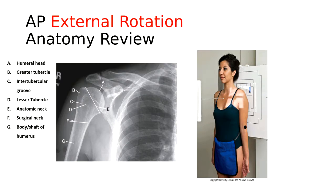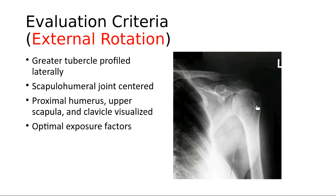On the labeled anatomy: A is the humeral head, B is the greater tubercle — on the external rotation, the greater tubercle is placed in profile. You also have the intertubercular groove, the lesser tubercle, the anatomic neck, the surgical neck, and the body or shaft of the humerus. On the external rotation, the greater tubercle is placed in profile laterally.